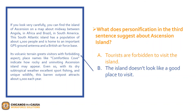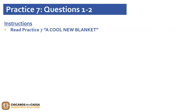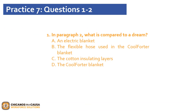Please pause the video and read Practice 7, A Cool New Blanket, found on page 76. Once you have completed reading the section, go ahead and click play. Now that you have read the passage, let's review question 1. In paragraph 2, what is compared to a dream? An electric blanket? The flexible hose used in the cool forwarder blanket? The cotton and simulating layers? Or the cool forwarder blanket itself? If you chose D, the cool forwarder blanket, you are correct. The first sentence of paragraph 2 tells you two things about the cool forwarder blanket: that it works like an electric blanket, and that it feels like a dream. Feel free to pause the video to complete and review questions 2 through 5.